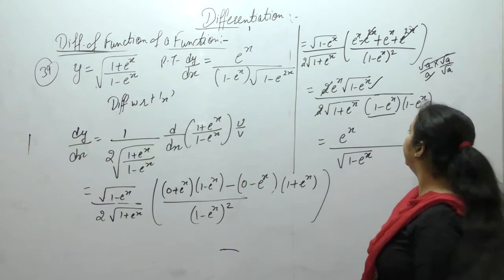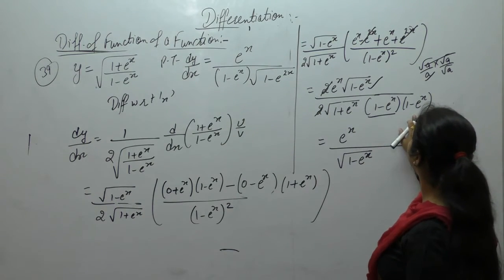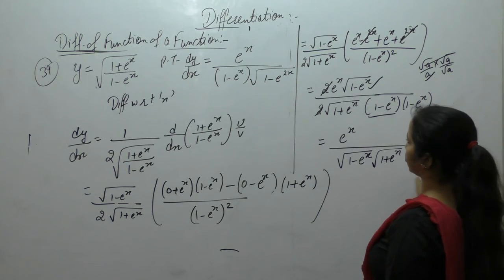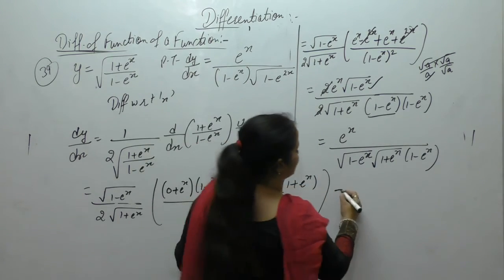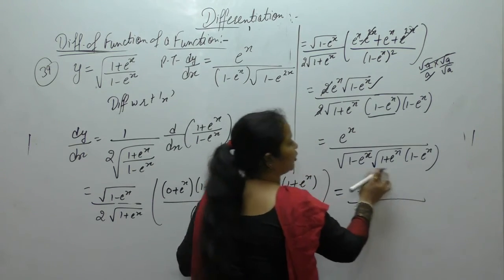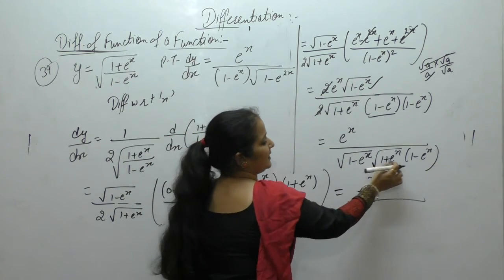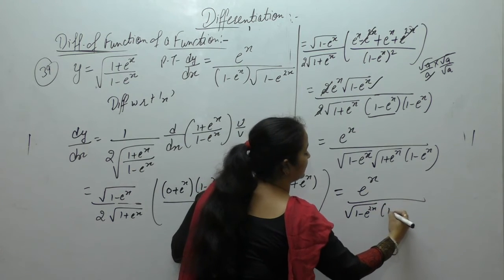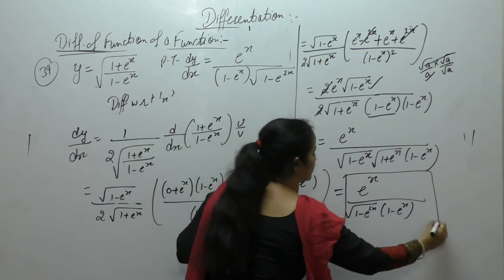So (1 minus eˣ) is here, and (1 plus eˣ)(1 minus eˣ) — both terms are under square roots. Using the identity (a minus b)(a plus b) equals a² minus b², we get (1 minus e²ˣ). This is what we wanted to prove.